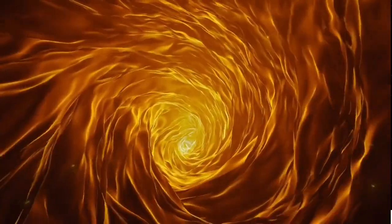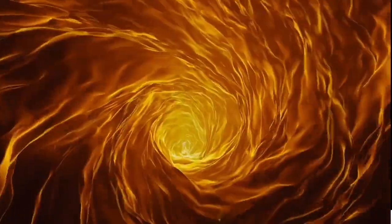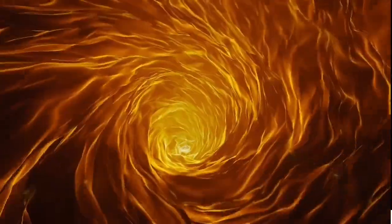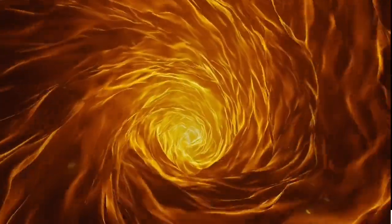Wormholes are not just science fiction. They're a prediction of general relativity. Although none have been observed, the theory allows for their existence. However, they are unstable and would likely collapse quickly. Still, the existence of an Einstein-Rosen bridge would mean that black holes could be gateways to other parts of space-time. Could we use a wormhole to travel through existence? Unfortunately, the answer is probably no, not yet. Even if we could stabilize a wormhole, it's unlikely we could use it to travel faster than light.